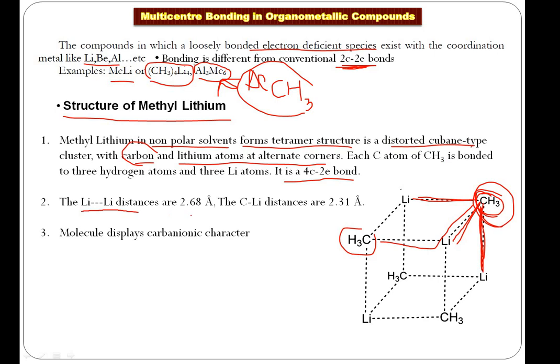Regarding distances: the lithium–lithium distance is 2.68 Å — these lithiums are at diagonal positions in the cube. The carbon–lithium (methyl–lithium) distance is 2.31 Å. The C–Li distance is shorter than the diagonal Li–Li distance. These are basic points we should remember at this level.